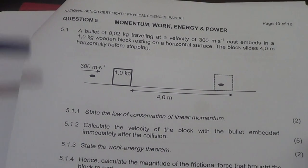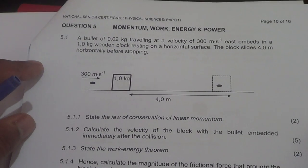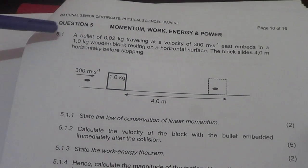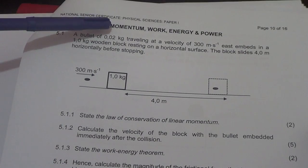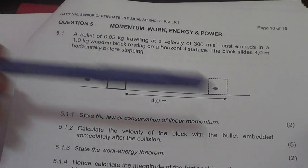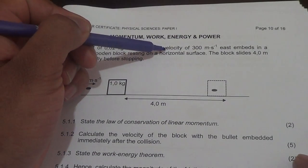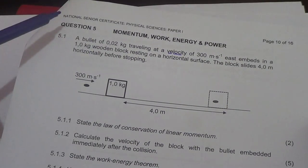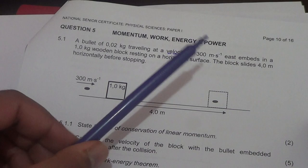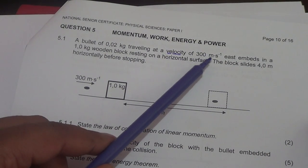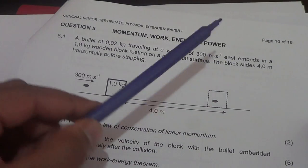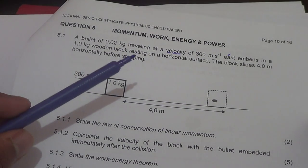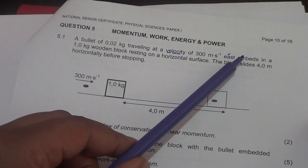Let's look at question 5. We're doing momentum, work, energy and power. The question: a bullet of 0.02 kg travelling at a velocity of 300 metres per second east. They used the term velocity and not speed, so we know velocity is a vector quantity — we must have direction. So yes, it is 300 metres per second east.